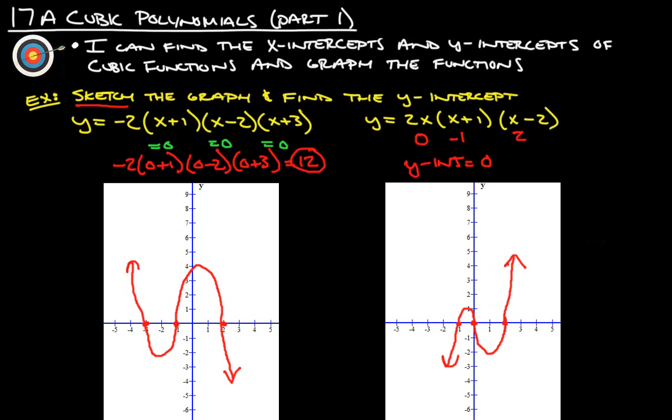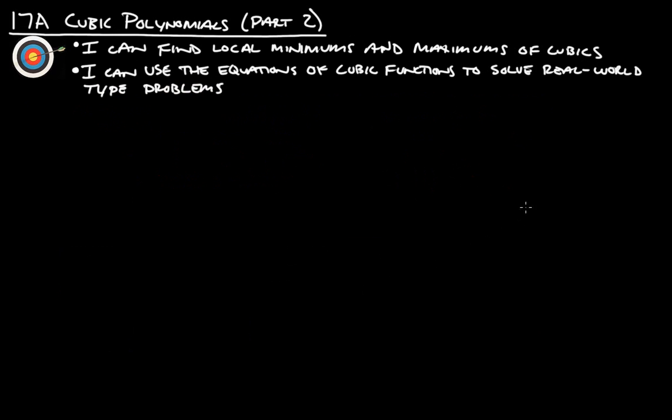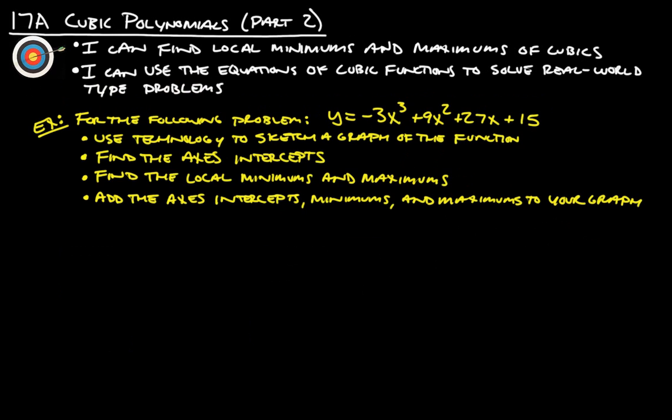All right. Let's take a look at the next part of 17a, and that would be this. So for the following problem, use technology to sketch the graph of the function, find axes intercepts, find local minimums and maximums, and then add the axes, intercepts, minimums, and maximums to your graph. So we're going to do graphing. I can hear you're cheering. Now, here's the great thing. Don't sweat it, because you get to use the handy-dandy graphing calculator. And it's actually going to make this problem nice and simple.